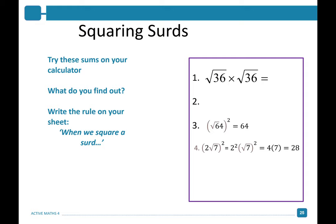Squaring SURDs. Put into your calculator root 36 times root 36 — you'll see that you get 36. Let's try another one: root 100 times root 100 gives you 100. When squaring any SURD, the square and your square root cancel out. The square root of 64 squared equals 64.